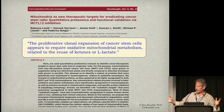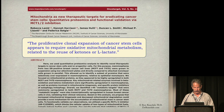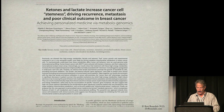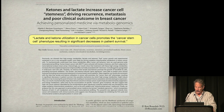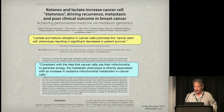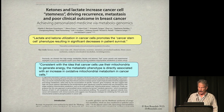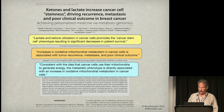Cancer stem cells have a different metabolism from other cells — in particular, they use a lot of mitochondrial oxidative phosphorylation. They like to use ketones, lactate, and fatty acids — anything they can get. Ketones and lactate increase cancer stemness, driving recurrence, metastases, and poor clinical outcome in breast cancer. The metastatic phenotype is directly associated with an increase in mitochondrial metabolism in cancer cells.